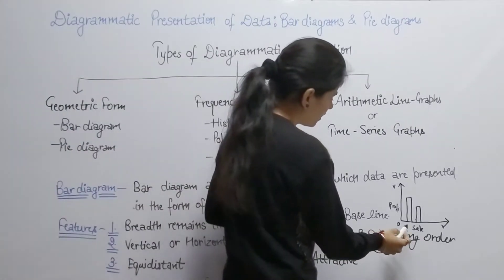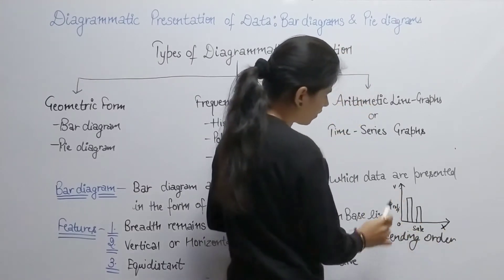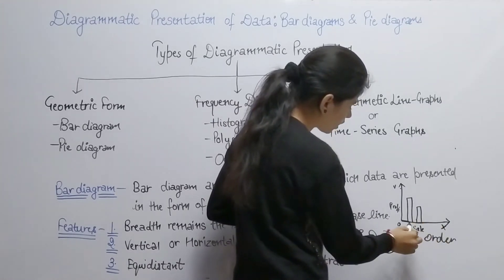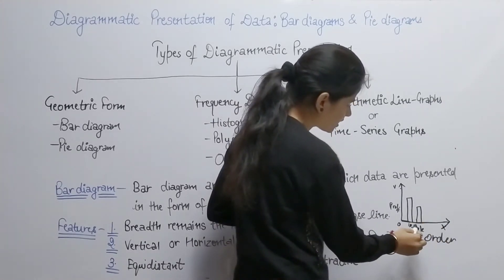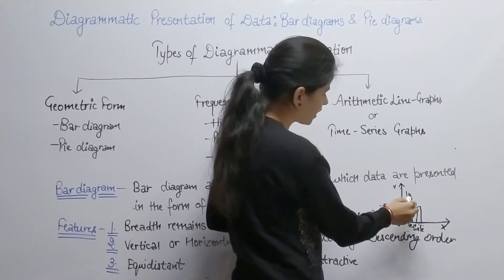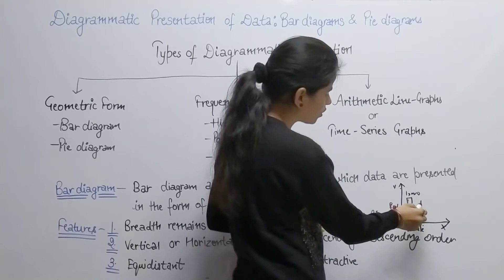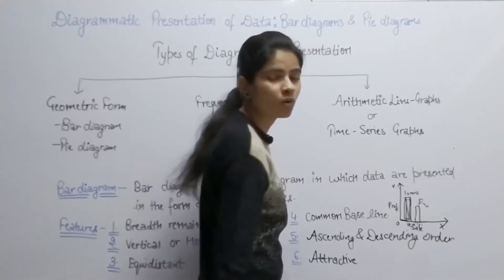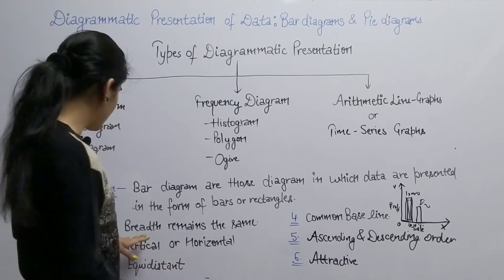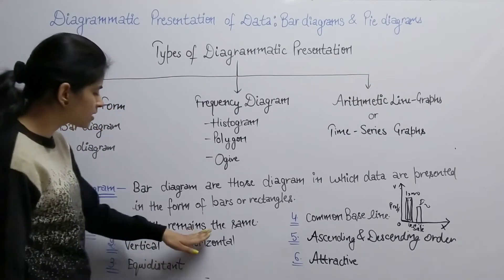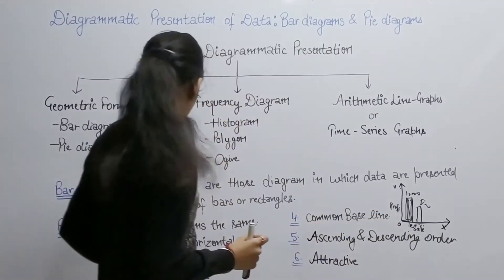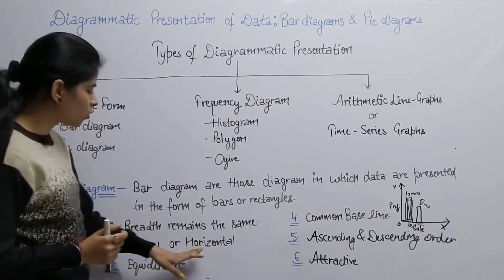Look at this — here is your x-axis and this is your y-axis. Suppose a firm has shown its sales on the x-axis for 2018, 2019, and 2020. The first feature is that the breadth will remain the same — the width of all bars in the diagram stays equal, whether vertical or horizontal.